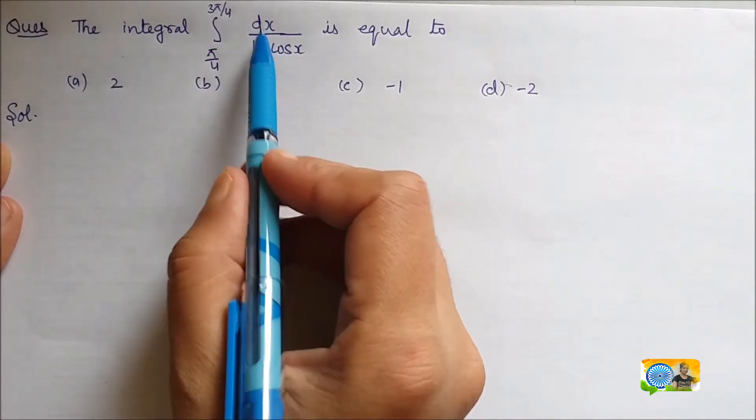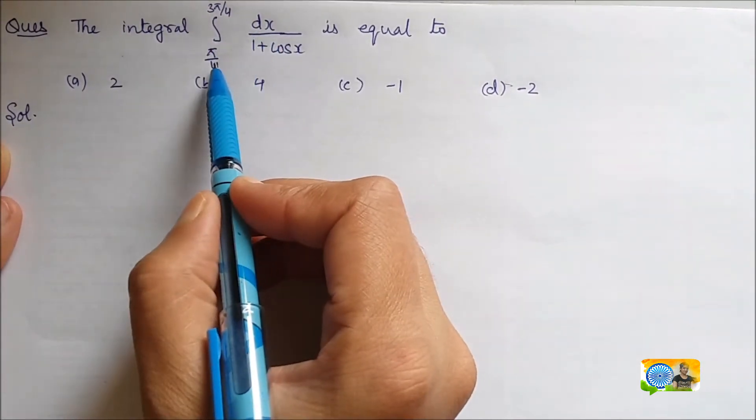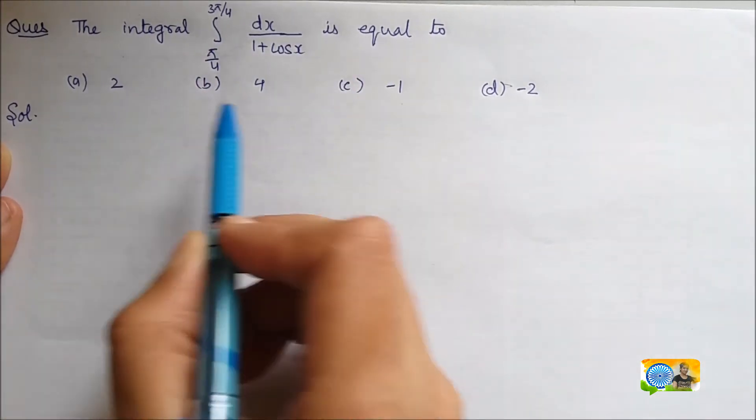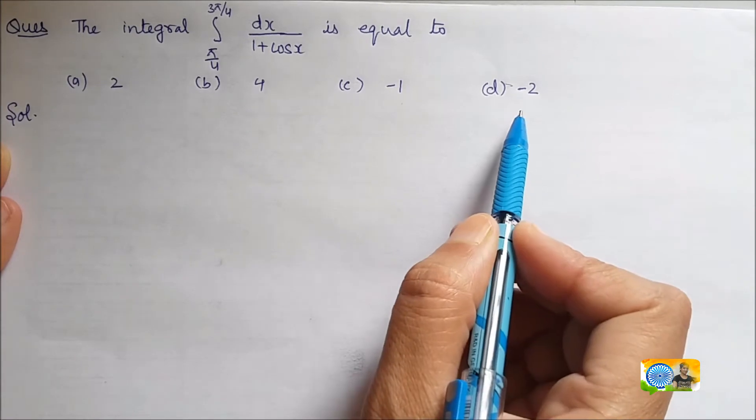The integral 1 upon cos x dx from the limits pi by 4 to 3 pi by 4 is equal to. Options are 2, 4, minus 1, minus 2.